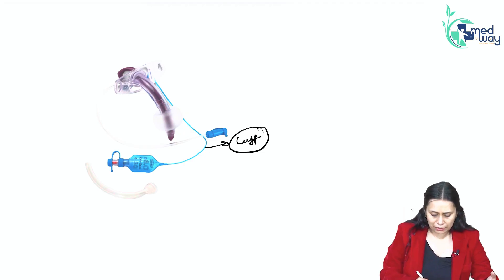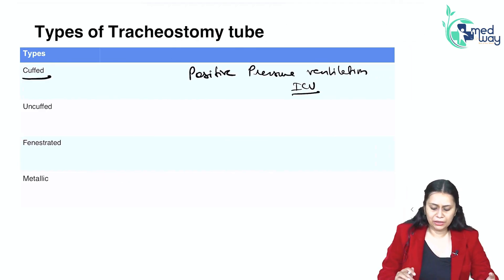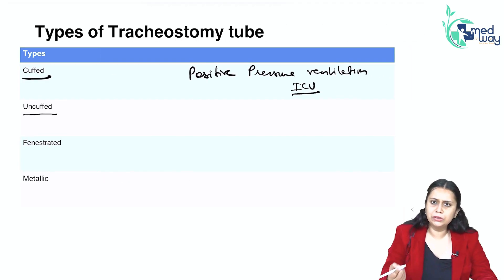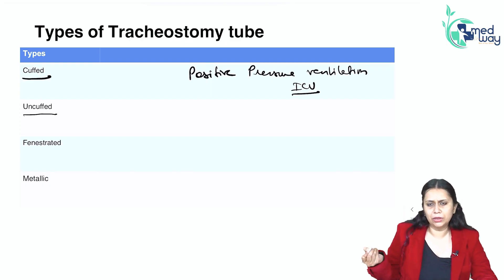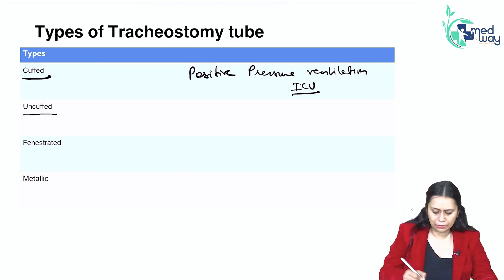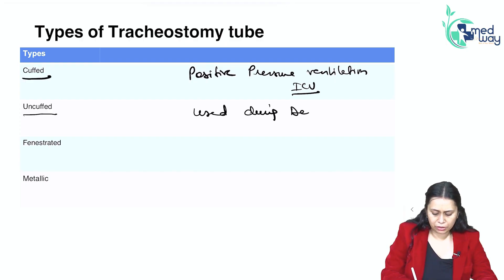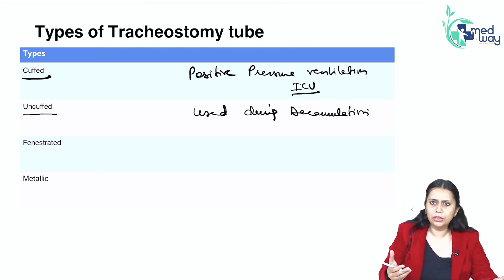Then we have the uncuffed tube. The uncuffed tube is used during weaning from the tracheostomy tube or decannulation — when we are removing the tracheostomy tube from the patient. It is not used during mechanical ventilation, as we need a proper seal by a cuff for mechanical ventilation.